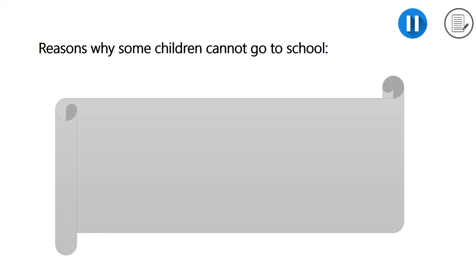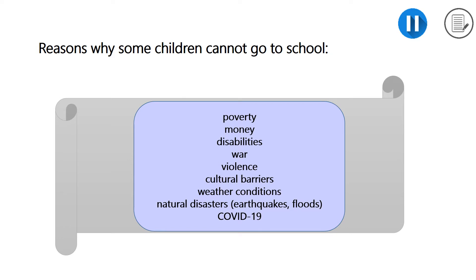Let's move on and think of the reasons why some children cannot go to school. Pause the video and write possible reasons. You probably think of poverty, money, disabilities, war, violence, cultural barriers, weather conditions, natural disasters, or COVID-19.